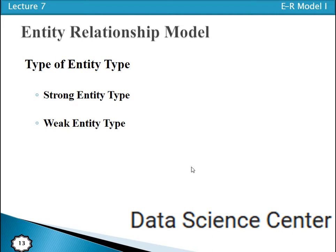I am Viral Khan from Data Science Center. In the previous tutorial we discussed the entity relationship model — the concept of entity, entity type, and entity set. Today we will discuss the types of entity type. Entity type is the collection of entities that share common properties or characteristics. Entity type has two further types.